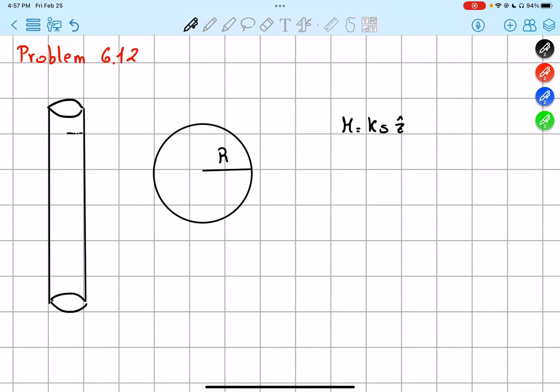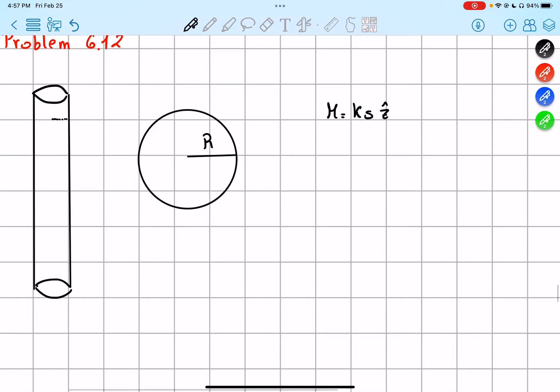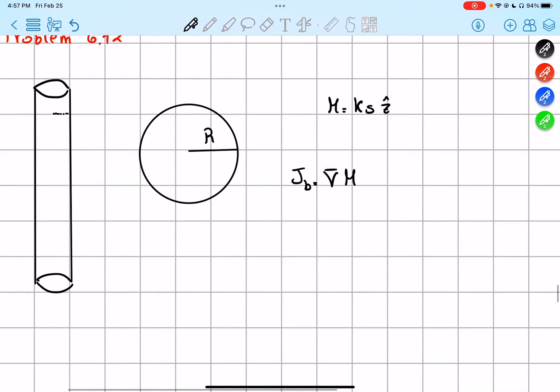So we have to find all the bound currents and calculate the field they produce. We know that Jb is equal to the curl of M, and Kb is equal to M cross product with n hat.